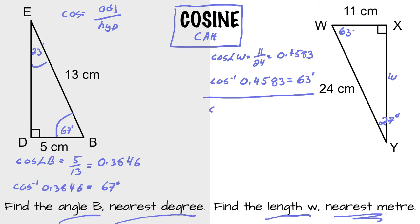And now we can find the length of W. So cosine 27 equals the adjacent, which is W, which is what we're trying to find, compared to the hypotenuse.